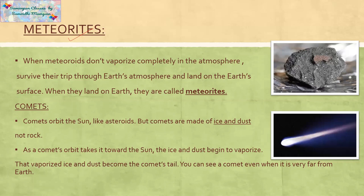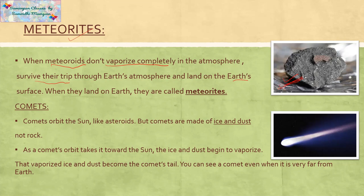What are meteorites? These are basically what happens when a meteoroid enters the Earth's surface but doesn't burn completely. They don't vaporize completely and they fall on Earth like a rock, as shown in the picture. They survive their trip through Earth's atmosphere and land on Earth's surface. When they land on the surface of Earth in the form of a piece of stone, because they are not able to burn completely, those meteoroids are known as meteorites.